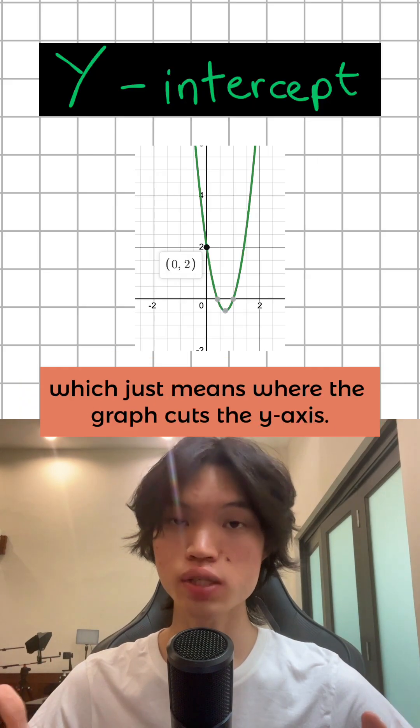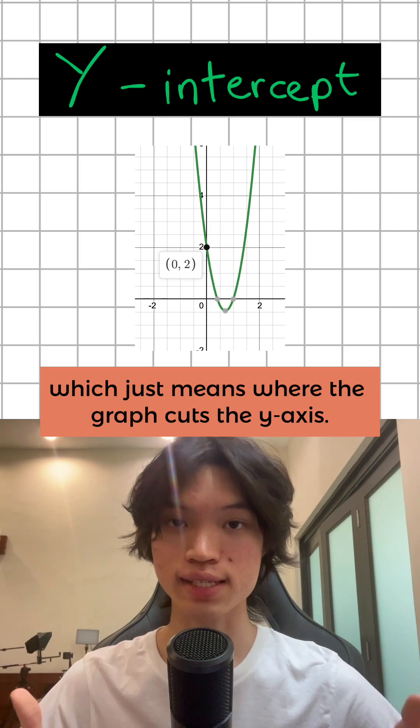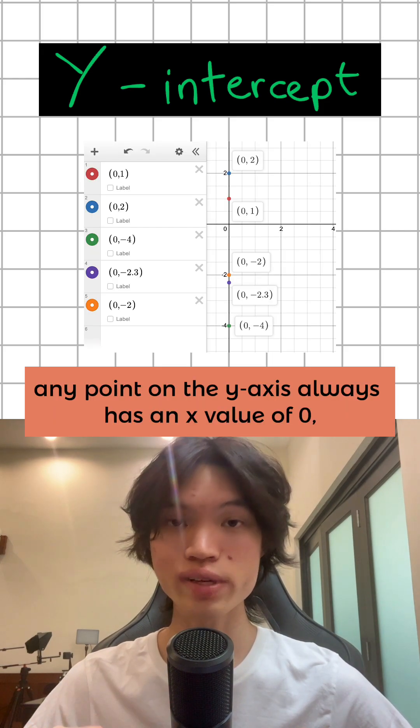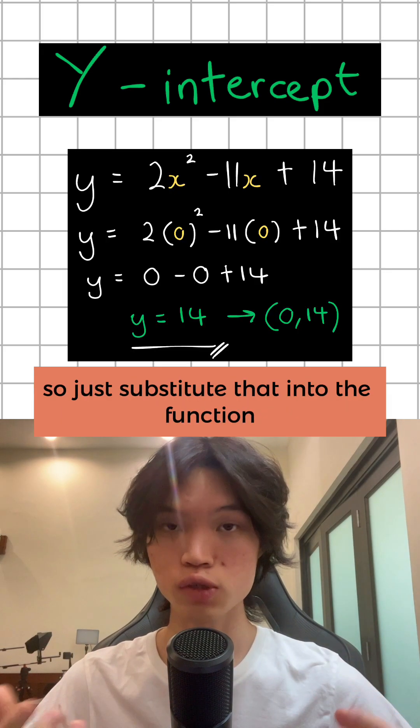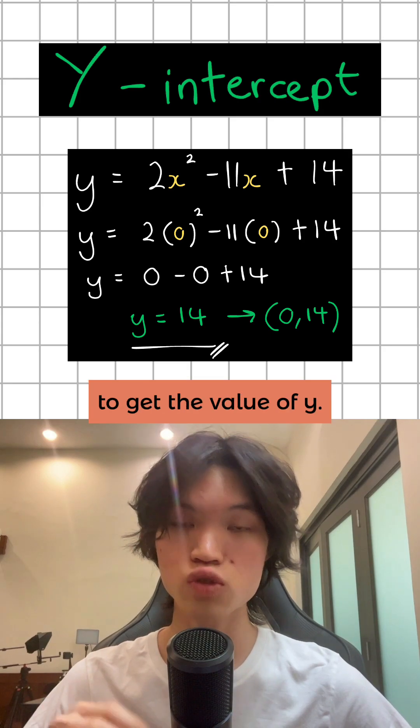Y stands for y-intercept, which means where the graph cuts the y-axis. Any point on the y-axis always has an x-value of 0, so just substitute that into the function to get the value of y.